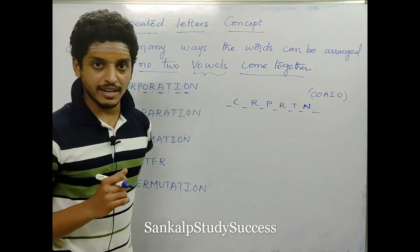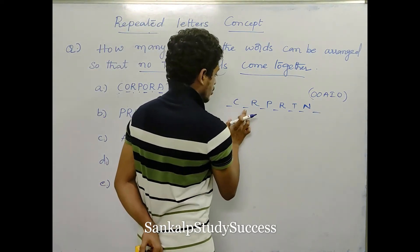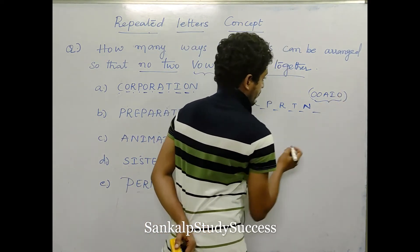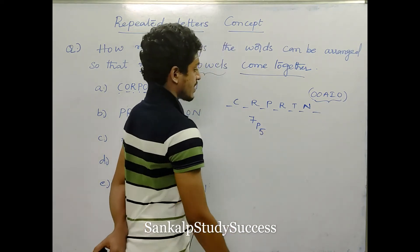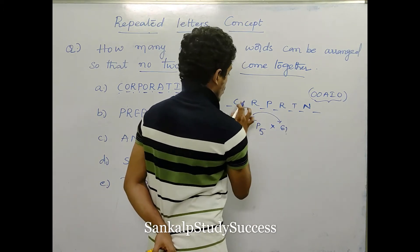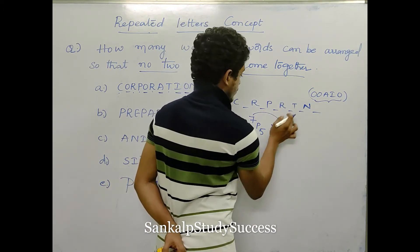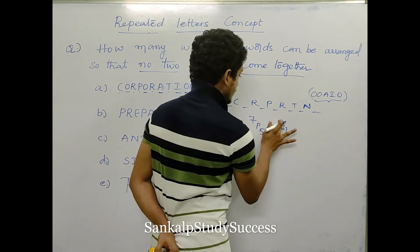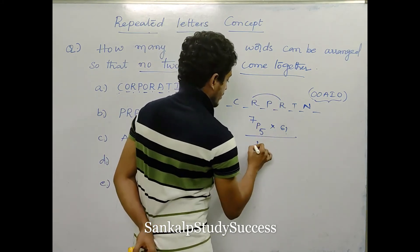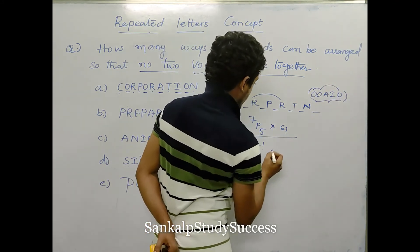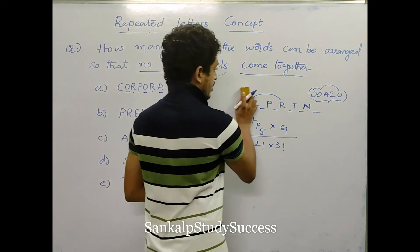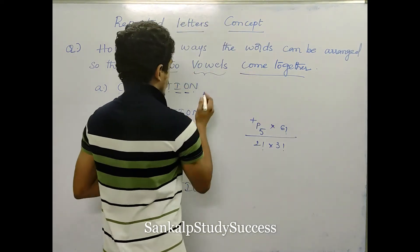We have consonants C, R, P, R, T, N, and vowels A, I, O. The answer is 7P5 into 6 factorial, because there are 6 consonants. In the denominator, this is a repeated case: R repeats 2 times giving 2 factorial, and O repeats 3 times. So the answer is 7P5 into 6 factorial divided by 2 factorial into 3 factorial.